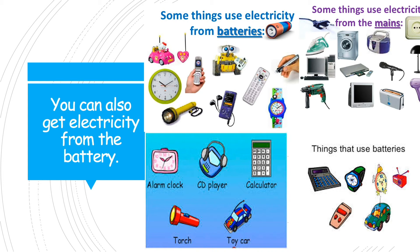You can also get electricity from a battery. Batteries store energy. Some things use electricity from batteries — like a watch or cell phones, as shown in the pictures here.